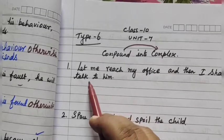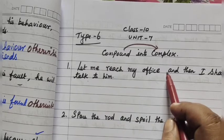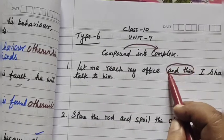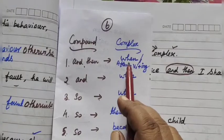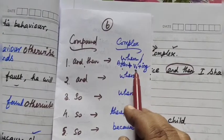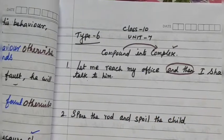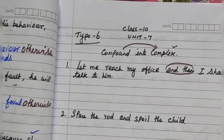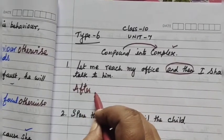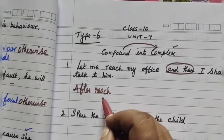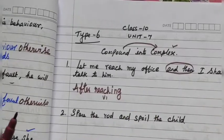We will explain the compound sentence. We will use the complex form and you can use 'when'. The rule is: after plus V1 plus ING. After plus V1 plus ING is suitable. So, after reaching my office. After O plus ING — V1 plus ING. After reaching my office. This is the AND being replaced.